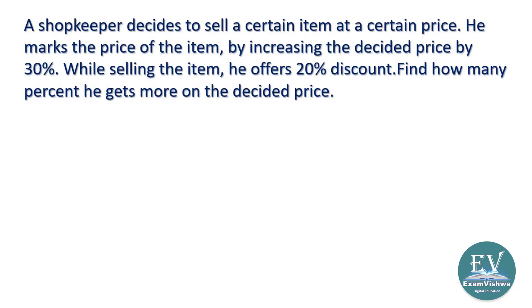If the decided price is 100, then the marked price will be 130 — 30 percent more. Then while selling, he offers 20 percent discount on the marked price. 20 percent of 130 needs to be calculated. You might initially think 30 percent up and 20 percent discount means 10 percent profit — but that is not correct, we need to calculate it properly.